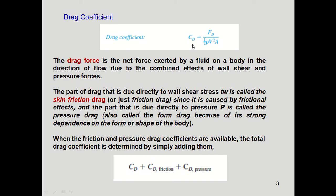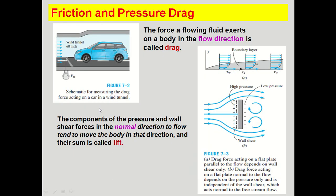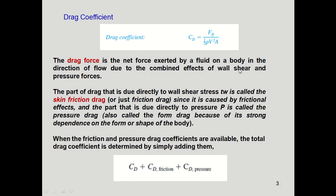The drag coefficient is calculated using the formula: C_D = F_D / (½ ρ V² A), where F_D is the drag force, ρ is density, V is velocity, and A is the surface area over which flow occurs. Using this formula we can calculate the drag coefficient, or if the drag coefficient is known, we can calculate the drag force. The drag force is the net force exerted by the fluid on a body in the flow direction due to the combined effect of wall shear and pressure. The part of drag due directly to wall shear stress τ_w is called skin friction drag.